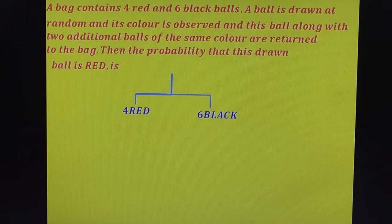Observe this question from probability. A bag contains 4 red and 6 black balls. A ball is drawn at random and its color is observed. This ball, along with 2 additional balls of the same color, are returned to the bag. Find the probability that the second drawn ball is red.